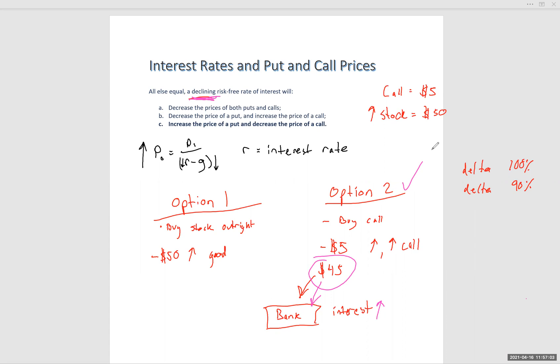So this is the factor upon which the relationship between interest rates and put and call prices works. Essentially, you have to think you're freeing up some cash. What's going on with your cash? It's earning more interest. Great. That means your decision to buy the call instead of the stock is looking better and better. And it's the exact inverse with the put.